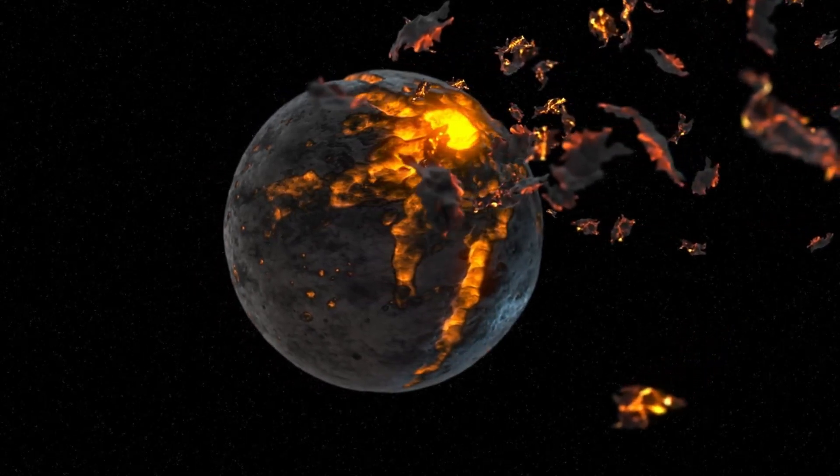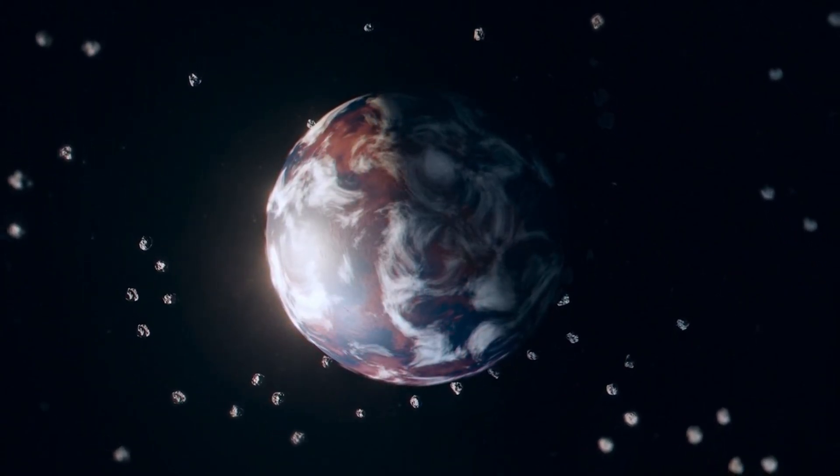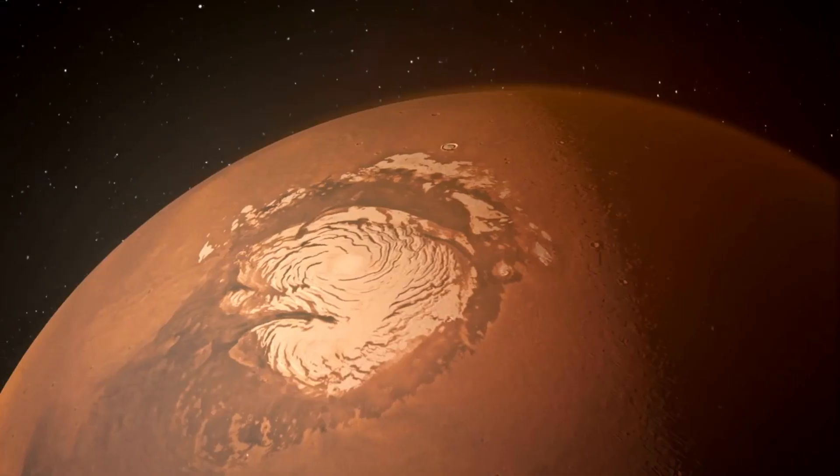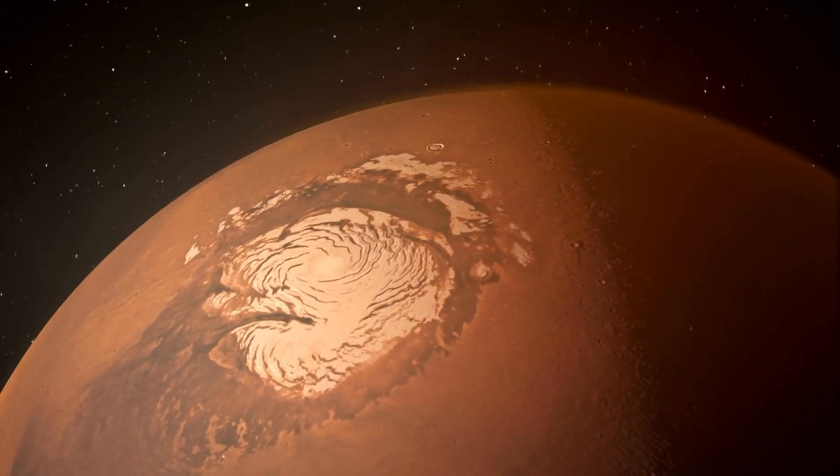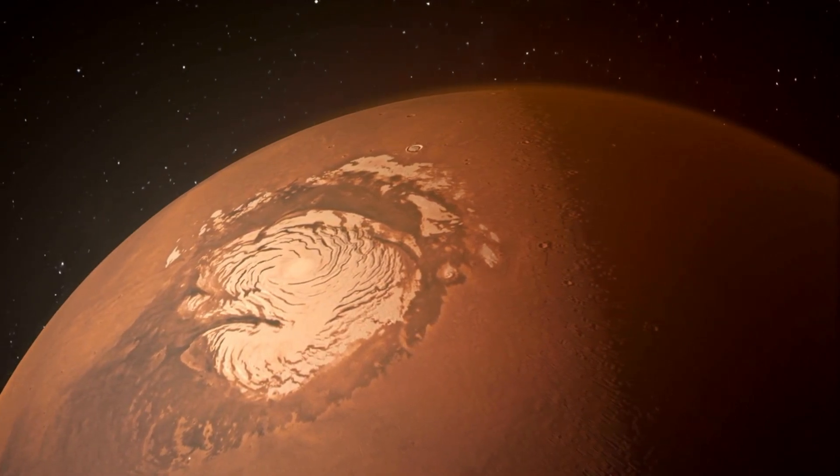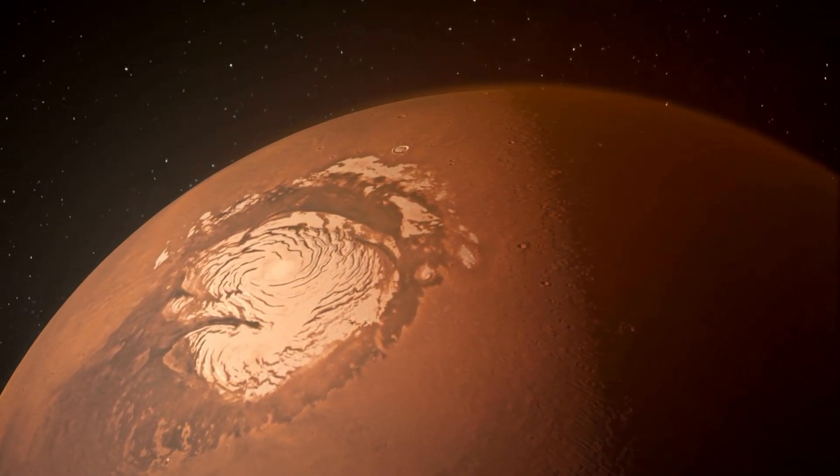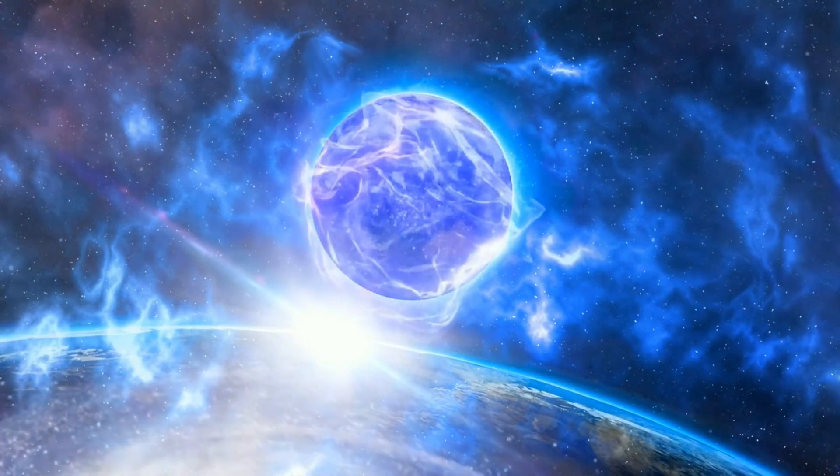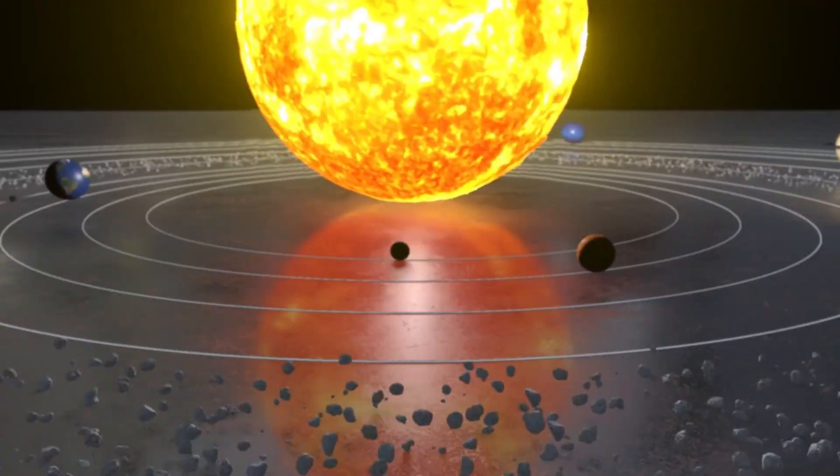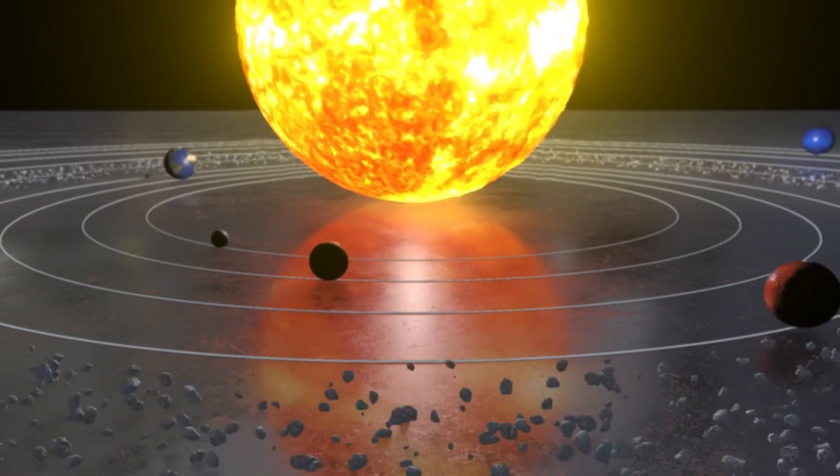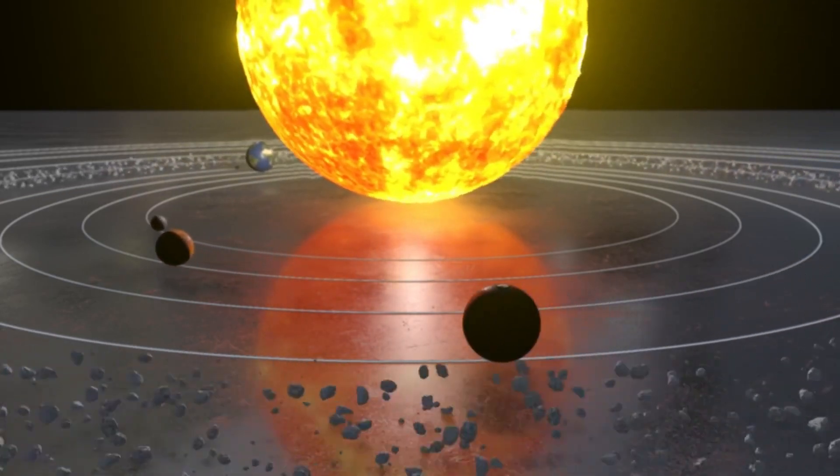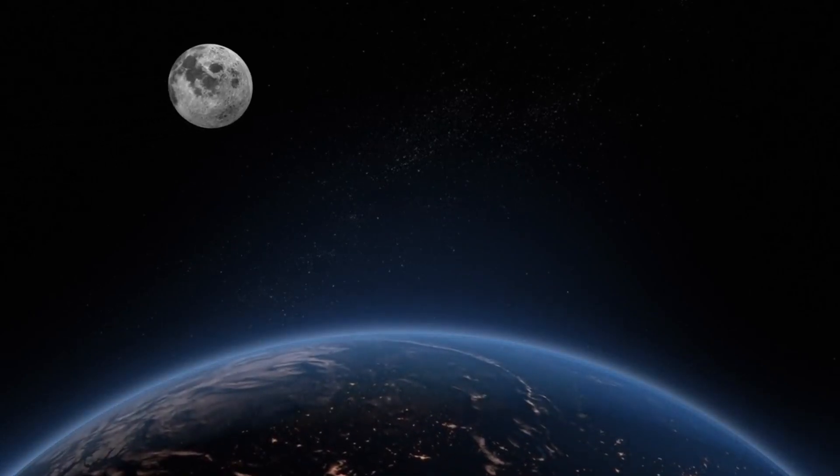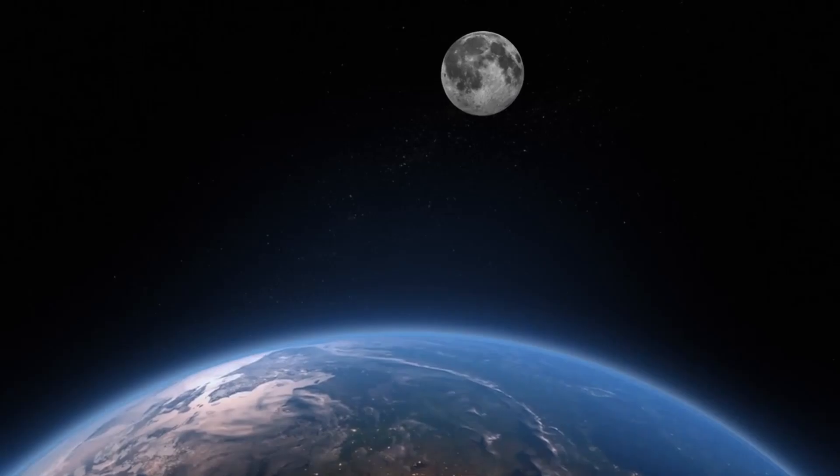This event, now known as the Carrington event, marked the beginning of the largest geomagnetic storm ever recorded. The white light Carrington saw was a massive solar flare, an intense burst of radiation caused by the release of magnetic energy stored in the Sun's atmosphere. This flare was so powerful that it produced a huge coronal mass ejection (CME) directly towards Earth, traveling at an astonishing speed of over 4 million miles per hour. The CME reached Earth in 17.6 hours, a remarkably short time considering the Sun is 93 million miles away from us.